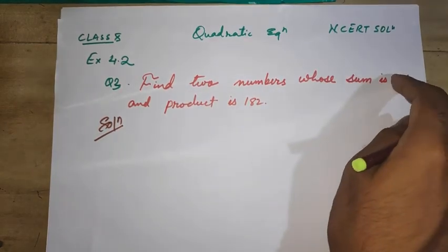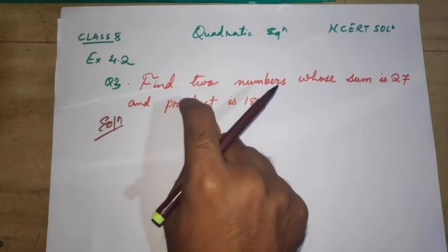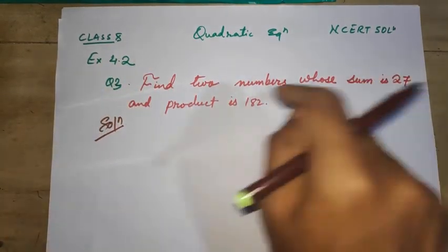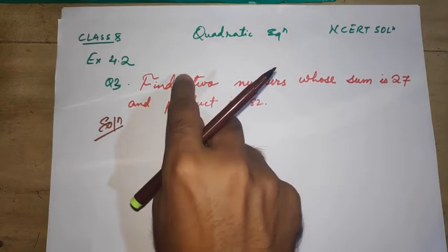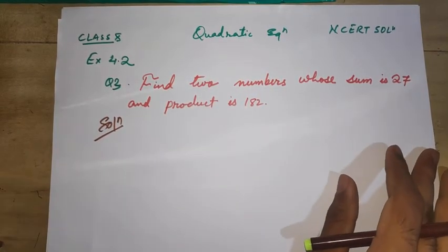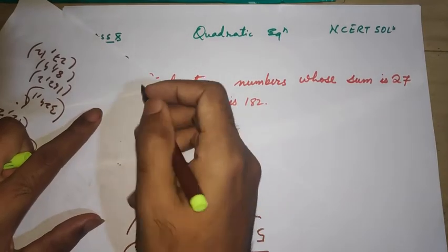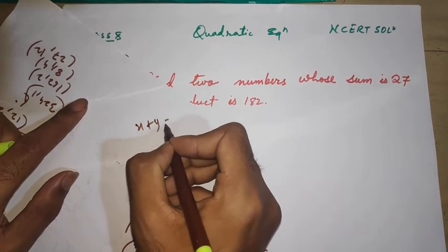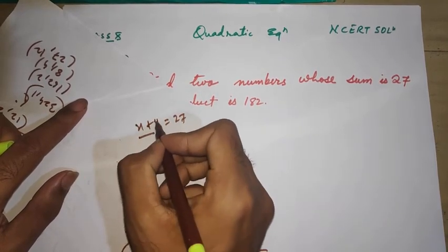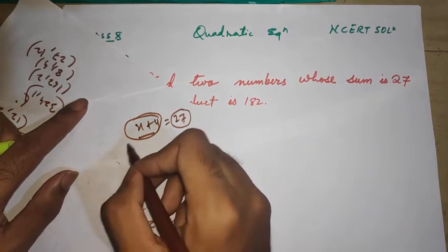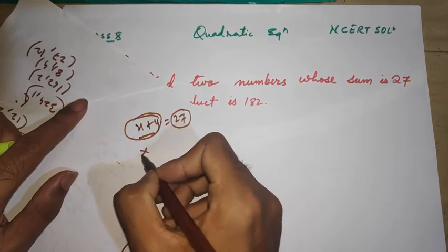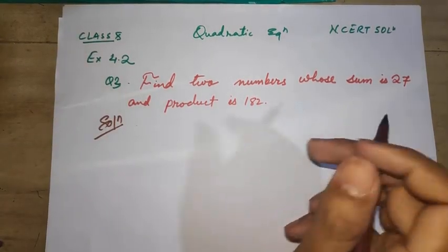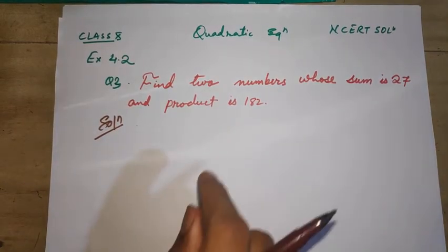Let's see this problem: find two numbers whose sum is 27 and product is 182. The question is saying there are two numbers. Adding both numbers, we get 27, and the product is 182. When we add the numbers we get 27, but if you multiply x into y it should be 182.